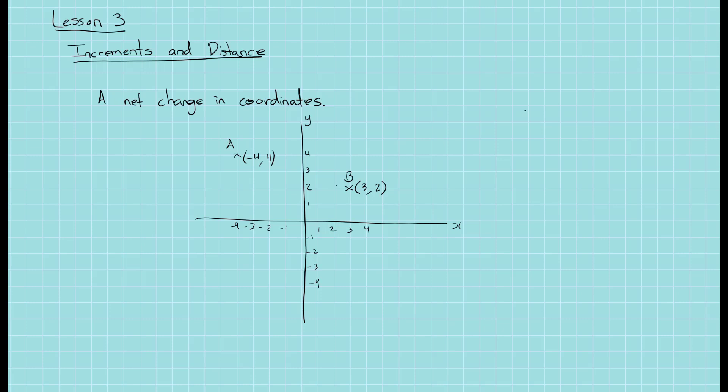So in going from A to B, what's the difference between the x coordinates and what's the difference between the y coordinates? Well, the x coordinate of B is 3, and the x coordinate of A is minus 4. Let us denote that distance by delta x.